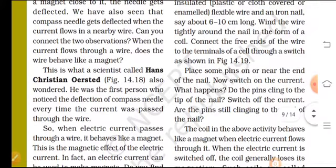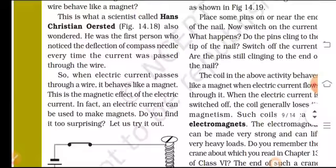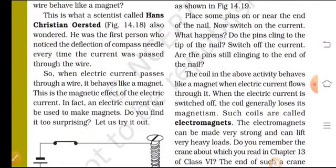When electric wire has current flowing through it, there is movement. This effect occurs when current flows through the wire - a magnetic effect is produced because of the flow of current. This is what scientist Hans Christian Oersted also wondered.